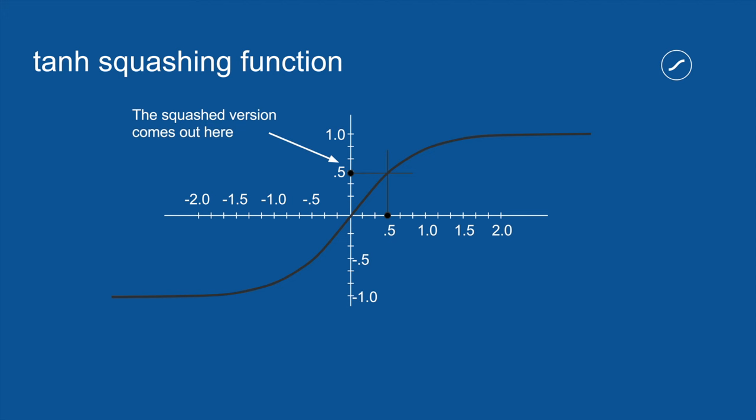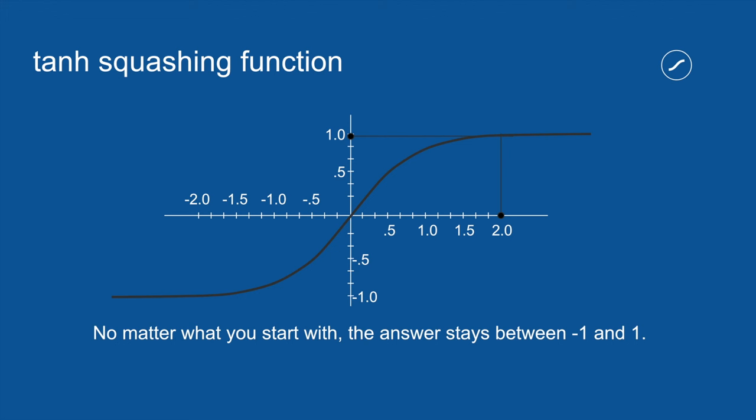For small numbers, the squashed version is pretty close to the original. But as your number gets larger, the output gets closer and closer to 1. And if you put in a big negative number, what you'll get out will be very close to minus 1. No matter what you put in, what comes out is between minus 1 and 1.